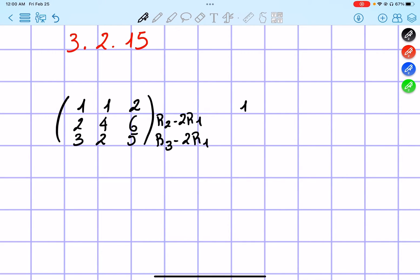I get row 1 remains the same, so 1, 1, 2. Then I get 0, 2, 2, and 1, 0, 1.